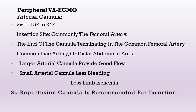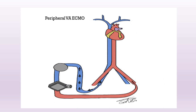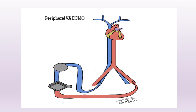We should note that if we insert a peripheral VA ECMO, a reperfusion cannula is mandatory and is recommended during insertion. In this demonstration of peripheral VA ECMO, blood is taken peripherally through the drainage cannula from the femoral vein, then pushed by the pump into the femoral artery, and from the femoral artery it is pushed into the aorta. The blood is pushed in a retrograde direction, opposite to the blood ejected by the heart into the descending aorta.